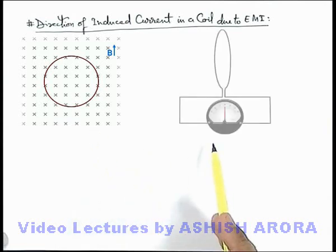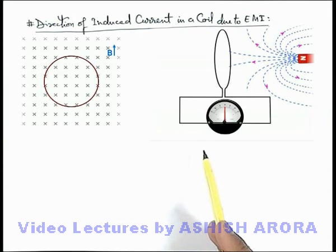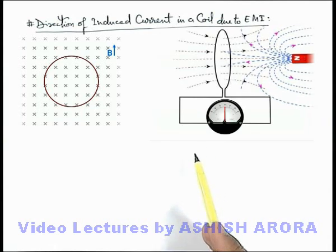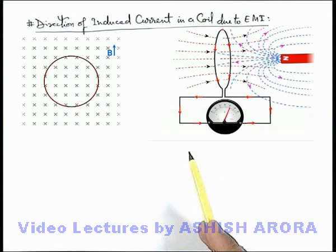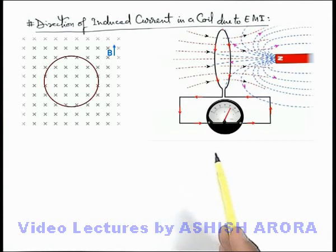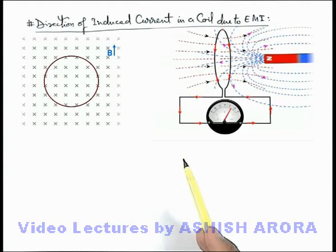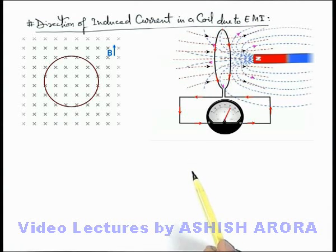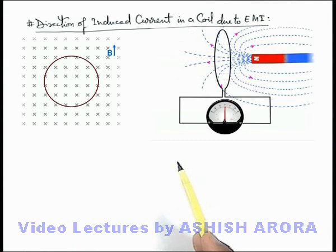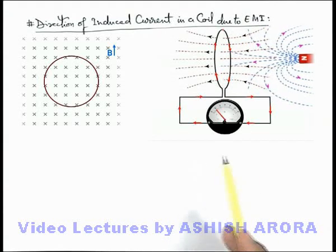The same phenomenon we can see in a practical situation. Here you can see a circular coil connected with a galvanometer. A bar magnet with its north pole facing toward the coil is brought close to the coil. The magnetic field of the north pole passes through the coil from right to left, and as the magnet comes close, the flux toward the left through the coil is increasing. So it induces an anti-clockwise current in the coil, due to which its own magnetic induction is developed in the rightward direction, opposing the leftward increment of magnetic induction due to the motion of the magnet.